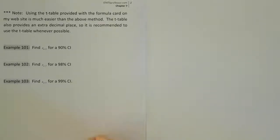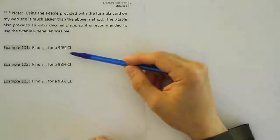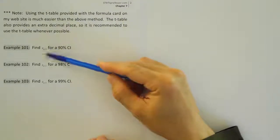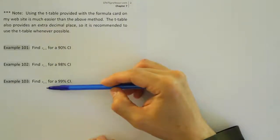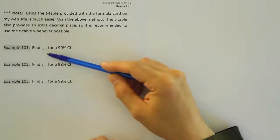All right, in these problems, these three examples, we're going to use a t-table to find the z alpha divided by 2 value. Now, normally a t-table should not be used to find z values, but in these problems,